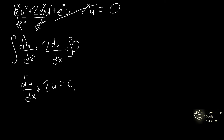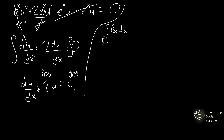Originally it was second order; now it's reduced to first order. We identify p(x) and g(x). To solve this first-order linear differential equation, we use the integrating factor e raised to the integral of p(x) dx, which gives e^(2x), and multiply both sides of the equation by it.